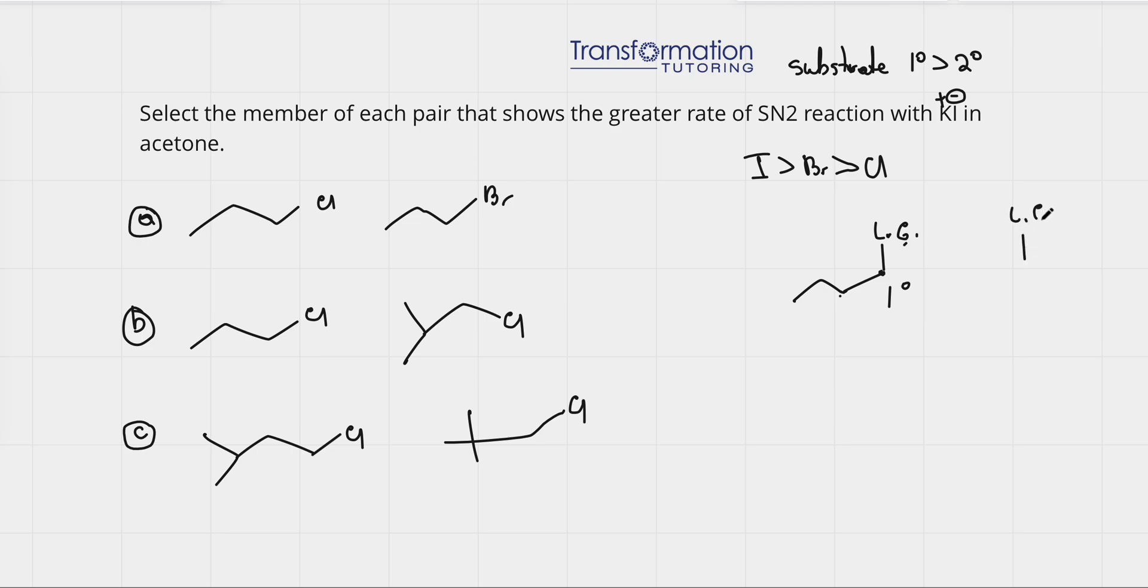So, for example, if I have a leaving group, and if there are a lot of groups in the back, the nucleophile won't be able to get through to this carbon, and it won't be able to attack.